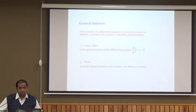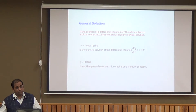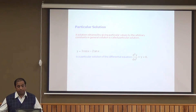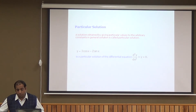The general solution: if the solution of a differential equation of nth order contains n arbitrary constants, it is called the general solution. For example, y = a cos x − b sin x is the general solution of the corresponding differential equation. However, y = −b sin x is not the general solution as it contains only one arbitrary constant b. A particular solution is obtained by giving particular values to the arbitrary constants in the general solution — for example, y = 3 cos x − 2 sin x is a particular solution of d²y/dx² + y = 0.